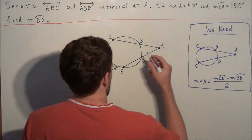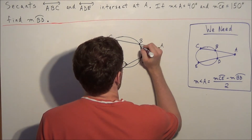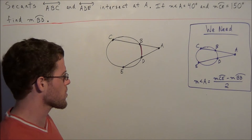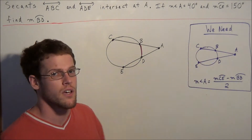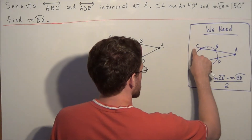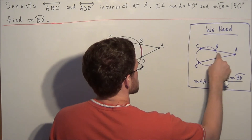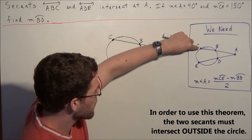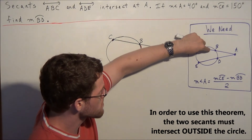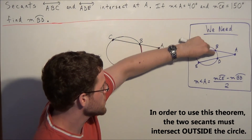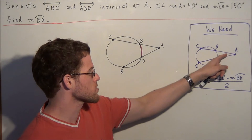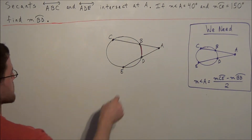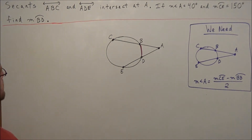That is, we're targeting this arc here. We note that in general, we have a circle with two intersecting secants. The arcs intercepted by these two secants allow us to set up an equation where the measure of arc CE minus the measure of arc BD, divided by 2, is equal to the measure of angle A. We're going to use that to find the measure of arc BD in this problem.